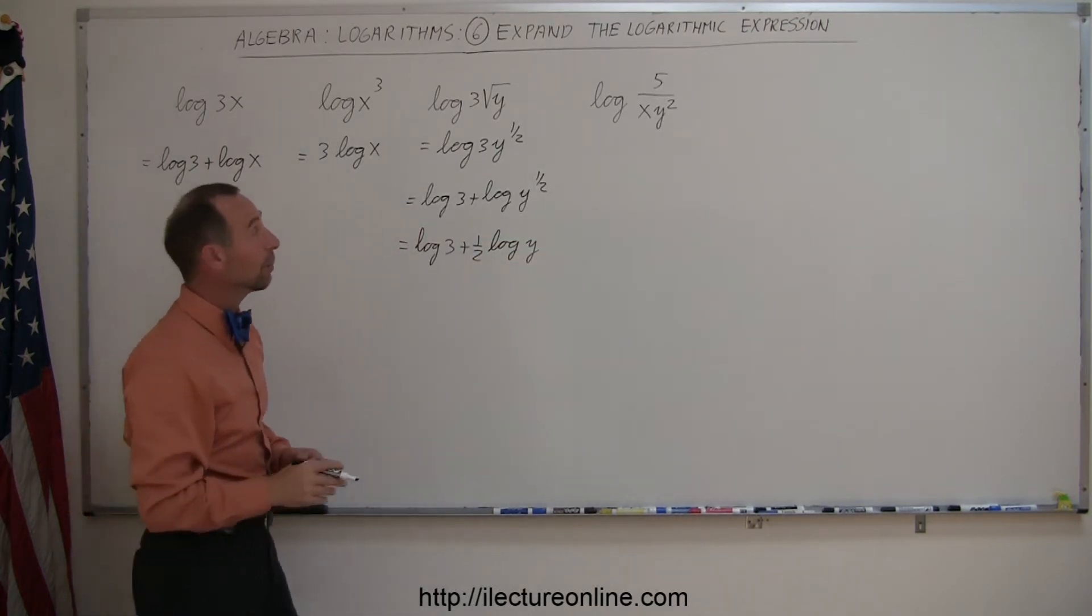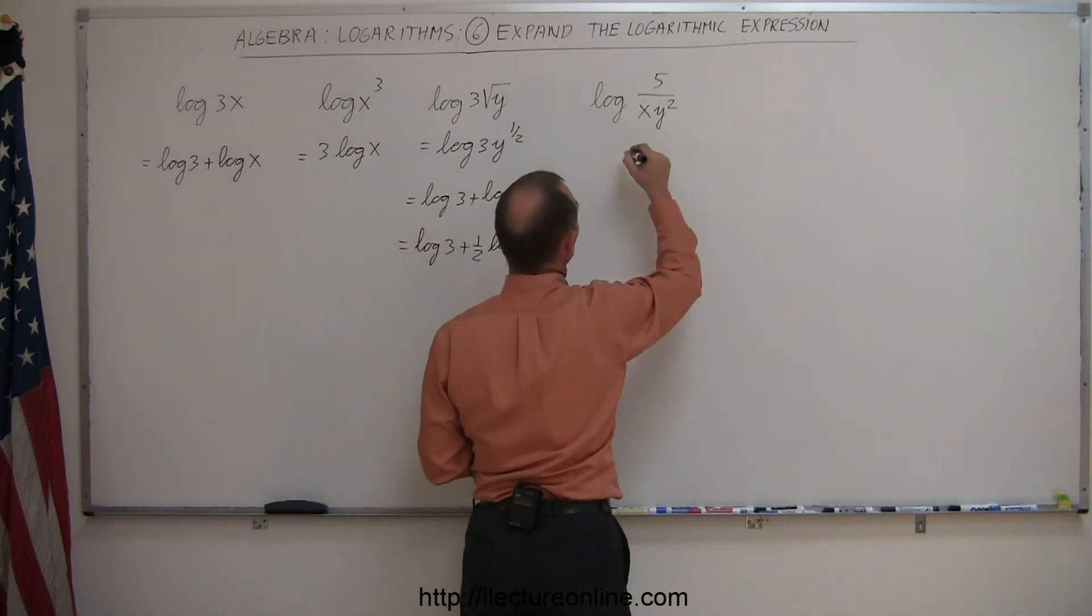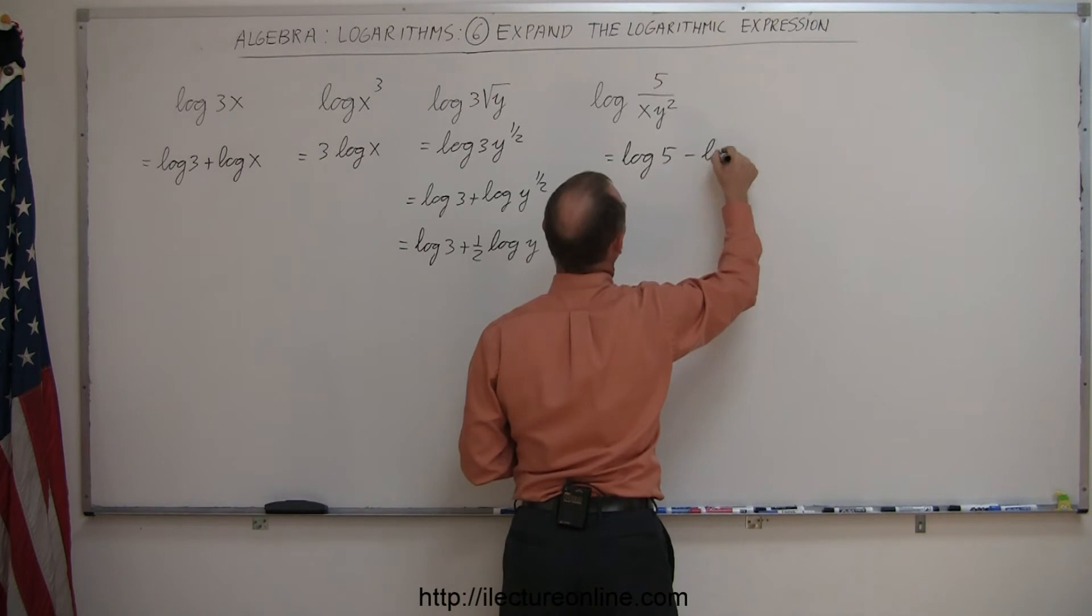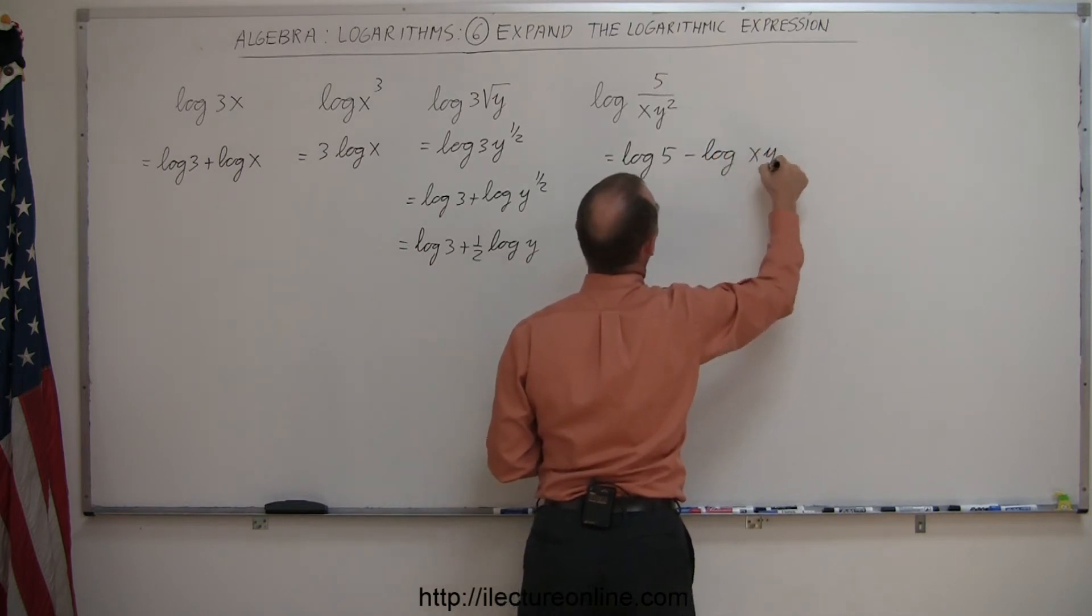And finally, our last example. Here we have a quotient, so this can be written as the log of 5 minus the log of xy squared.